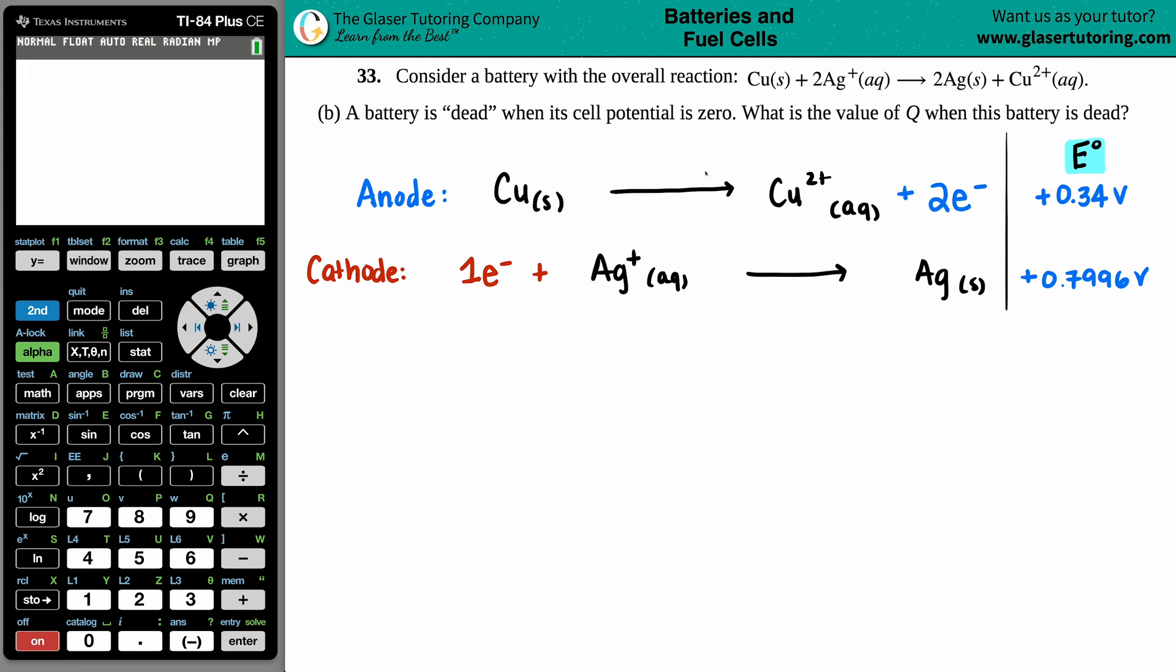Number 33. Consider a battery with the overall reaction: Cu solid plus 2 Ag plus aqueous yields 2 Ag solid plus Cu2+ aqueous. And then we have letter B. So a battery is considered dead when its cell potential is zero. What is the value of Q when this battery is dead?